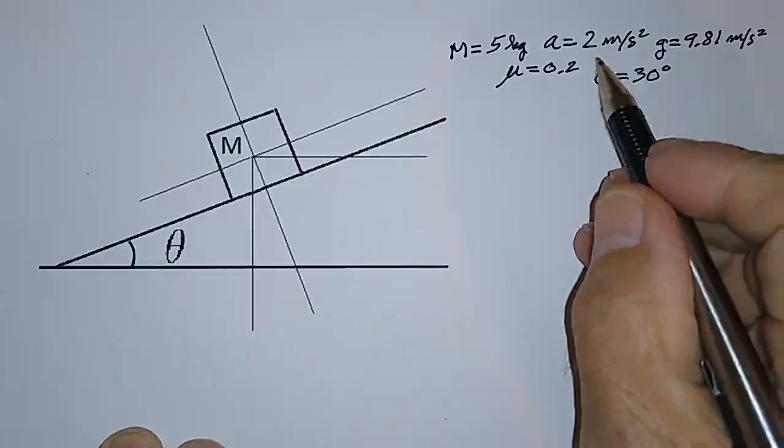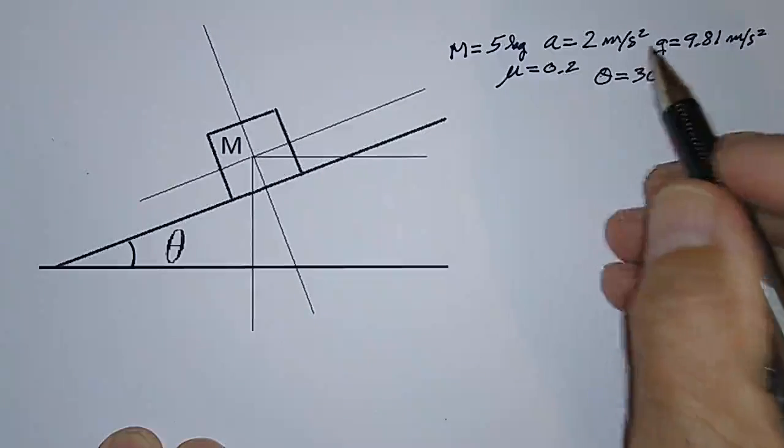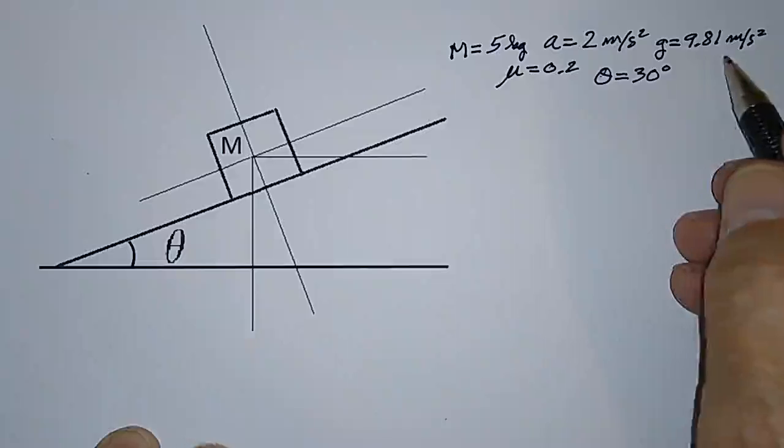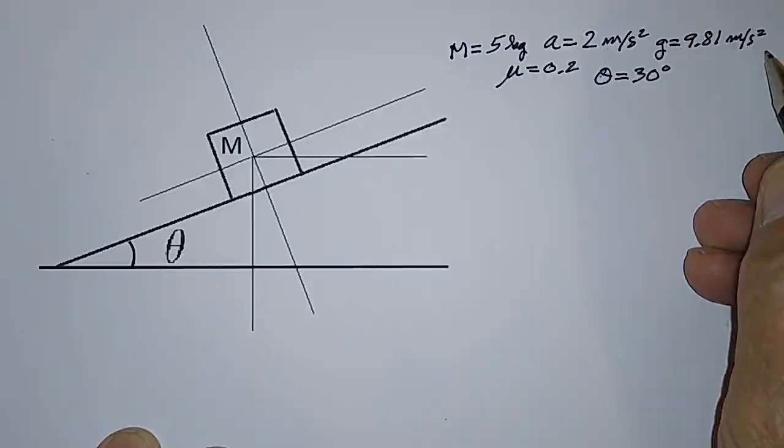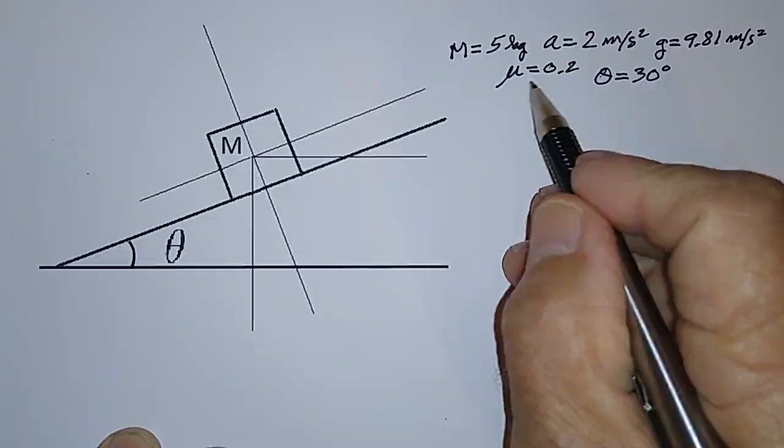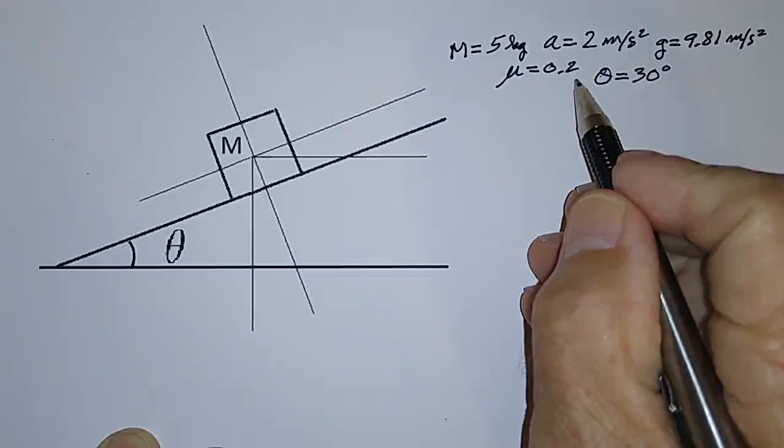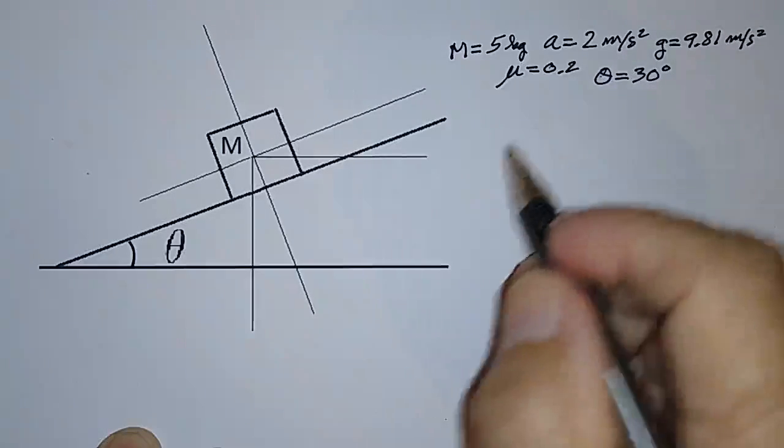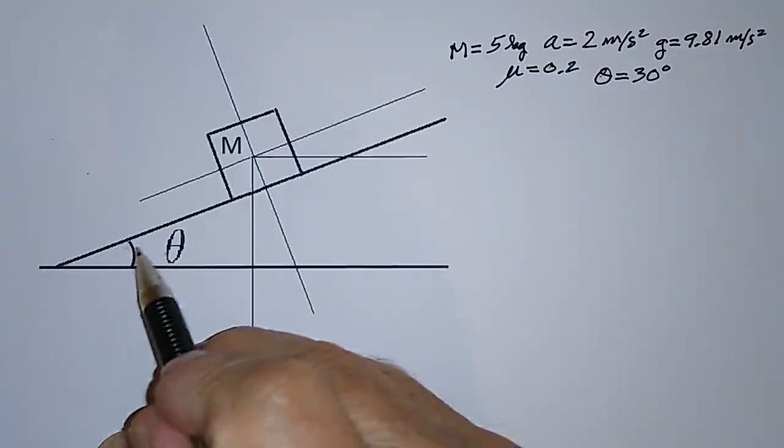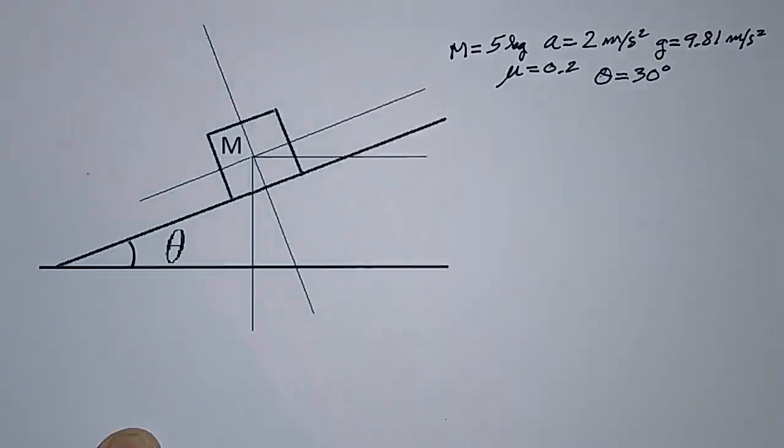I've written already the parameters that are important here. The mass is 5 kilograms. Acceleration up the ramp is 2 meters per second squared. G we're going to take is 9.81 meters per second squared. Coefficient of kinetic or sliding friction is 0.2. And the angle that the plane makes with the horizontal is 30 degrees.